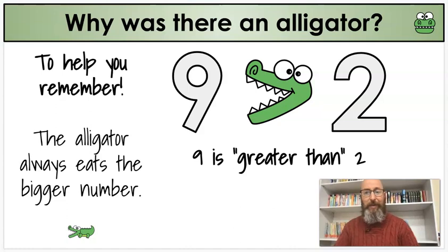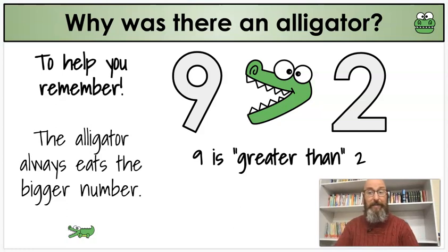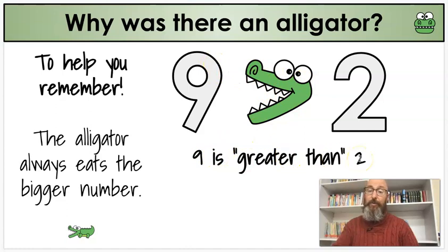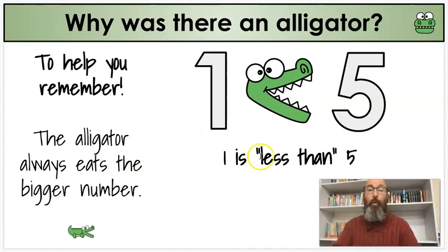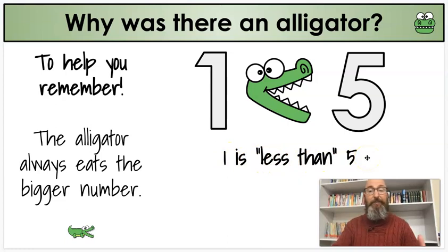Why was there an alligator on the front screen? Usually your picture has to do with it. Well, the alligator is there to help you remember which one to use, because the alligator always eats the bigger number. I know I always want to eat the bigger piece of cake — and that's a problem. So we know the alligator is going to eat the bigger number. We see our alligator here: it's eating the nine because nine is greater than two. Or we see it here — one is less than five because the alligator is eating five.